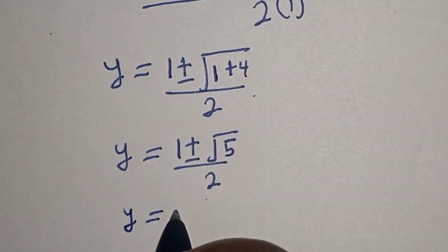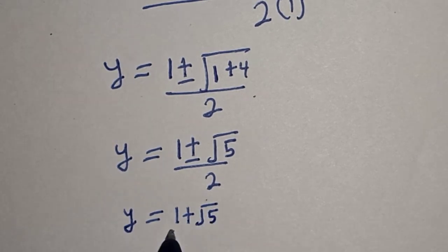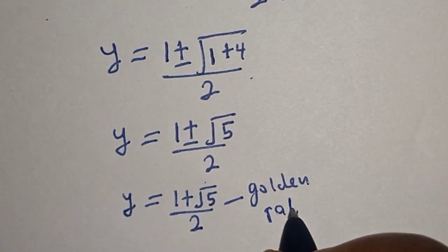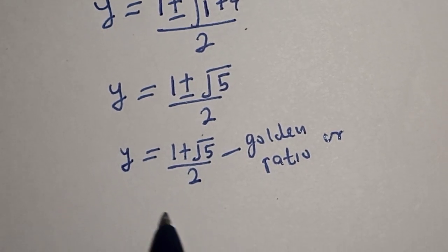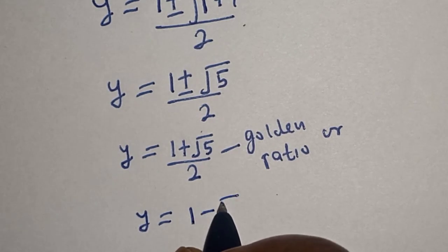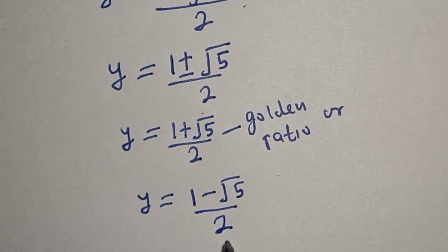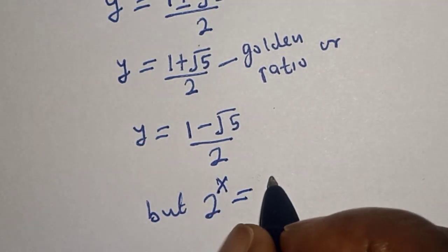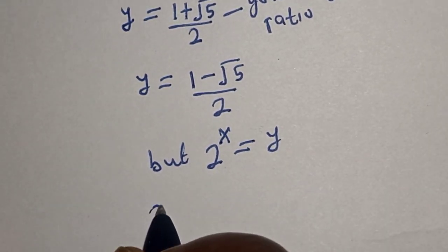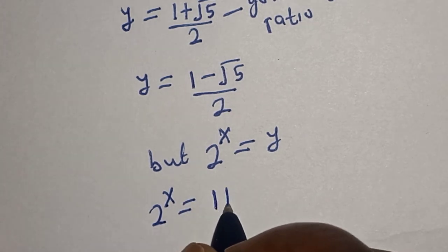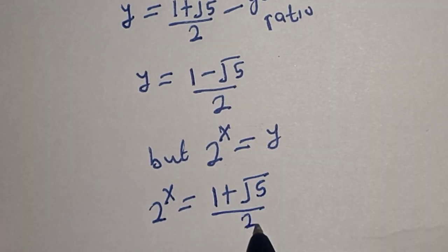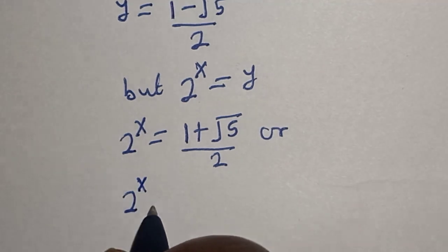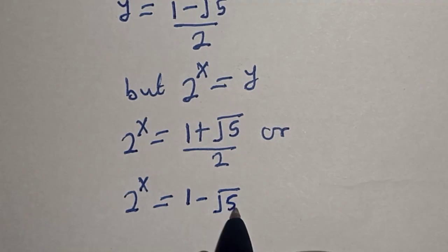Therefore y equals 1 plus root 5 over 2, which is called the golden ratio, or y equals 1 minus root 5 over 2. Recalling that y equals 2 to the power of x, we have either 2 to the power of x equals 1 plus root 5 over 2, or 2 to the power of x equals 1 minus root 5 over 2.